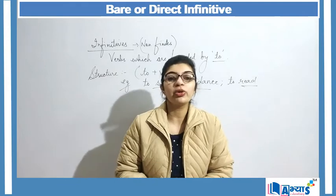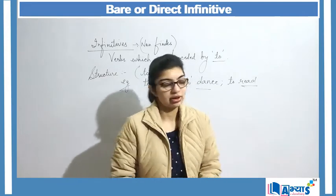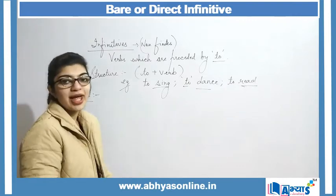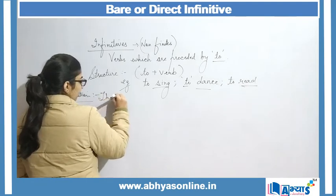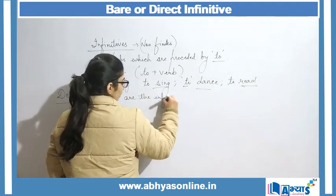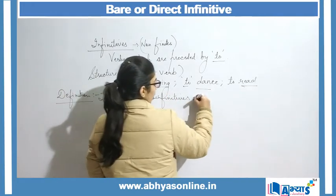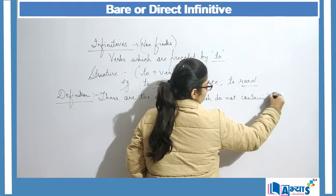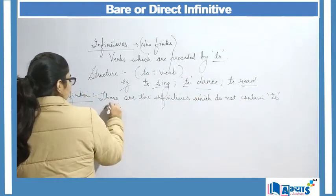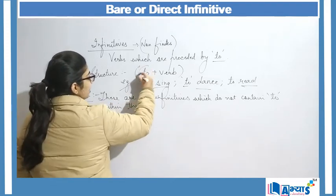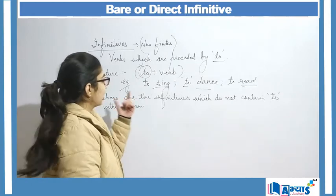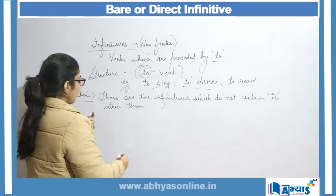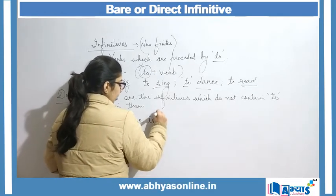Direct infinitive or bare infinitives are those infinitives which do not contain 'to' in them. The definition of direct or bare infinitive is that these are infinitives which do not contain 'to' within them. This means that 'to' is not present overtly — it is in a hidden form. Because 'to' is not visible and 'to' is considered part of an infinitive, they are referred to as bare infinitives.